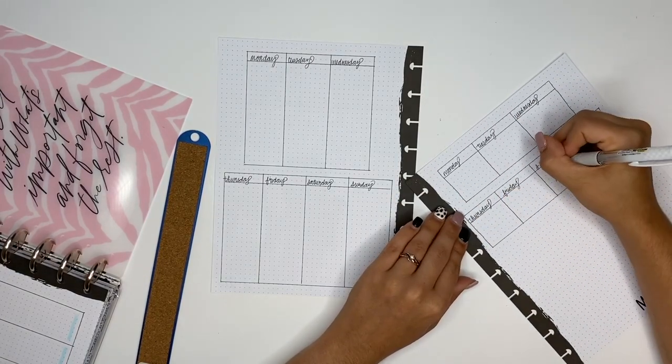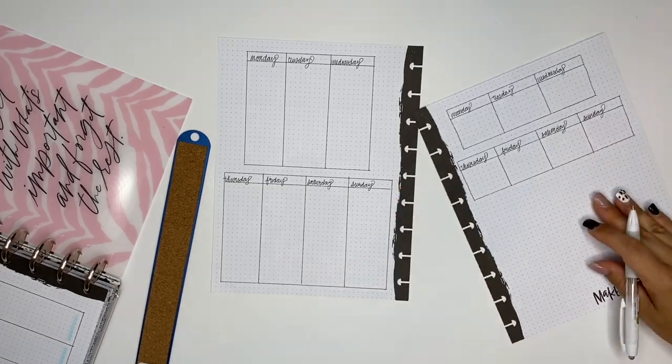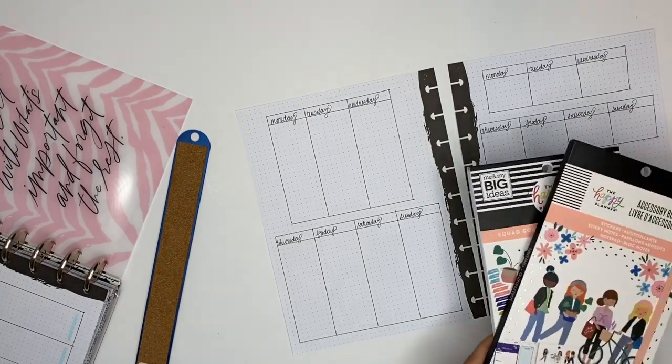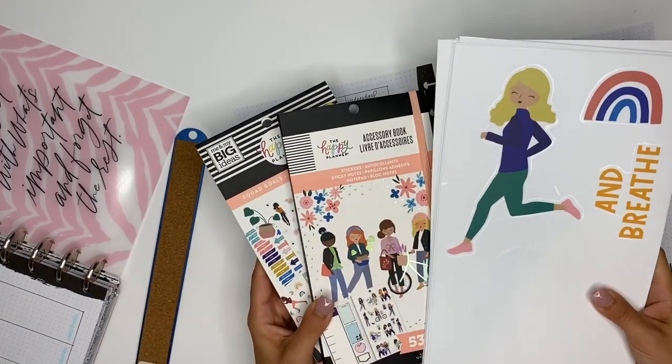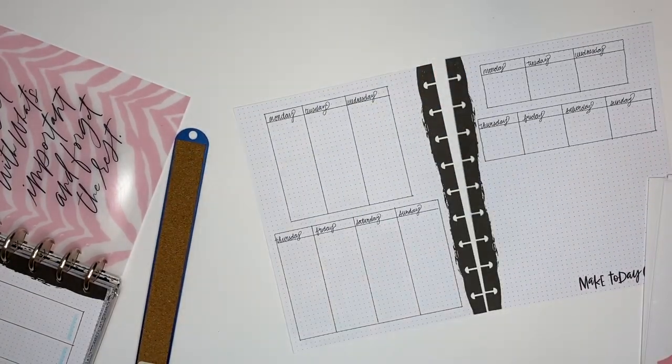But I'm taking it and at the top I'm writing like Monday, Tuesday, Wednesday, so on and so forth. And I did that on both sides, so that way the left side is for nutrition, the right side is for workouts.